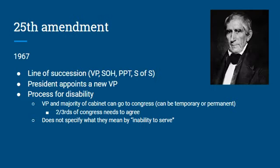The 25th Amendment, ratified in 1967, essentially reaffirms the line of succession. The line of succession was written into law by Congress and establishes around 13 to 15 different positions that would take over if something happened to the president and many cabinet members at once. Essentially, the vice president becomes president first, then the Speaker of the House, then the President Pro Tempore of the Senate, then the Secretary of State, and then the order in which other cabinet positions were established. We've had vice presidents take over for presidents, but no one farther down the line.